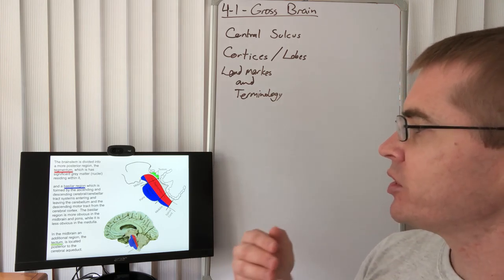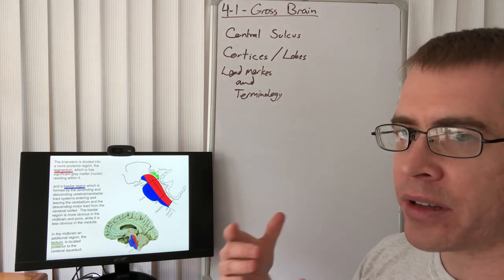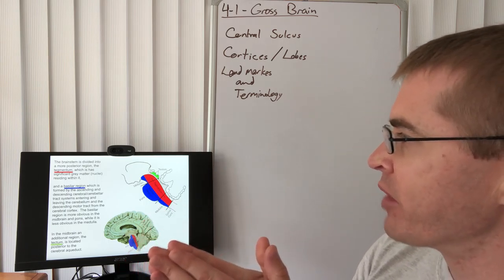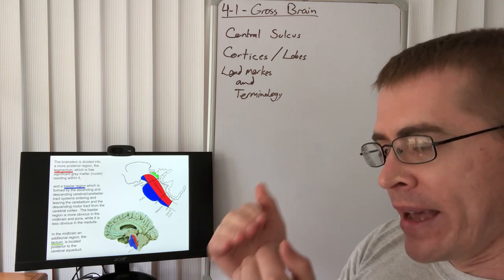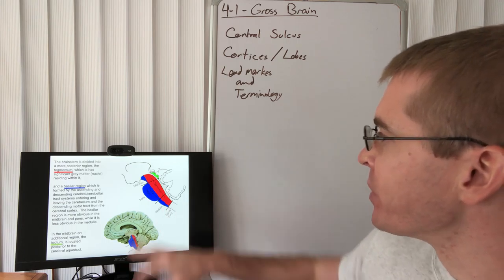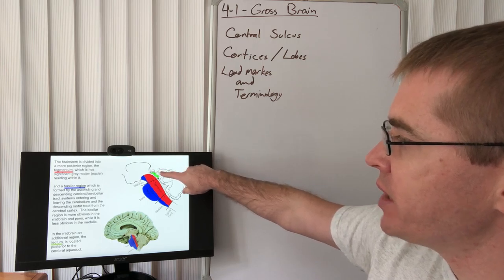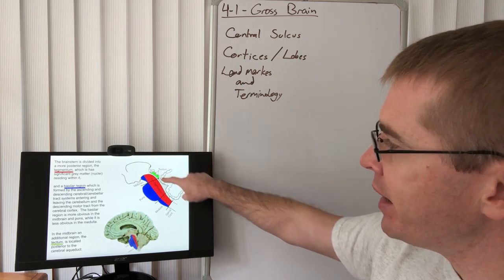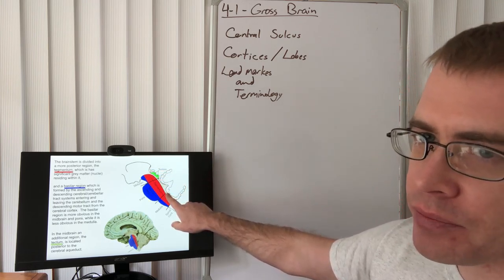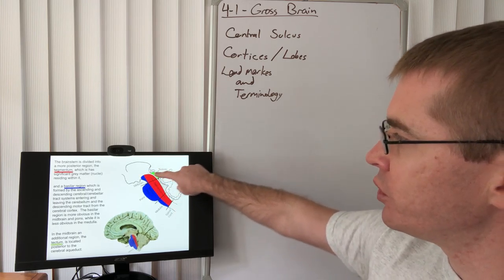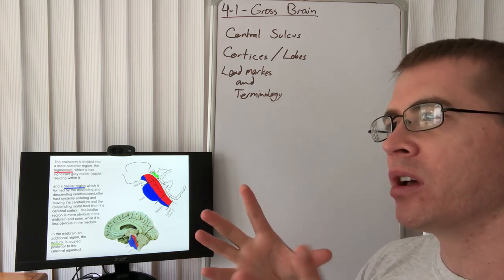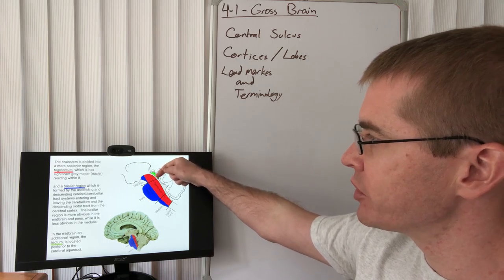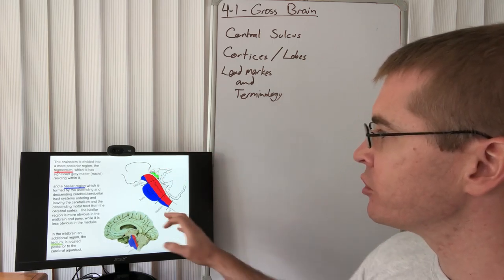And then just some terminology to orient different portions of the brainstem. So we can divide the brainstem into an anterior and a posterior region. The posterior most region is called the tectum or the roof of the brainstem. So that is behind the cerebral aqueduct and the fourth ventricle. So the tectum, mainly composed of the colliculi, the superior and inferior colliculi, which you can see represented by these two bumps on the green tectum in this drawing.